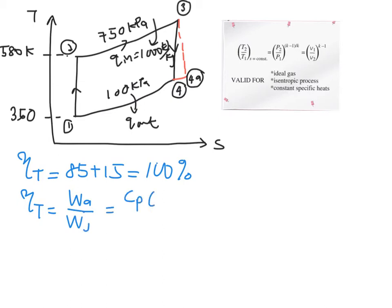So in this case, it is Cp, T3 minus your T4a over your Cp, T3 minus your T4s. And now that you have 100%, Cp value is the same, so you can cancel out.